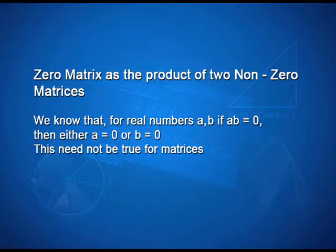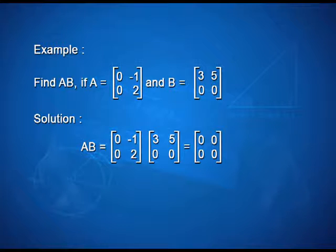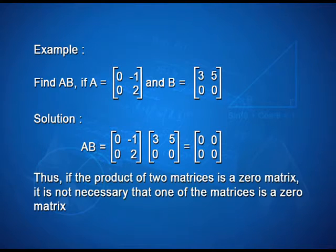Now let us see a zero matrix as the product of two non-zero matrices. We know that for real numbers A and B, if AB is 0 then either A is 0 or B is 0. This need not be true for matrices. Find AB if matrix A equals [0, minus 1; 0, 2] and matrix B equals [3, 5; 0, 0]. On simplification, we get a zero matrix of order 2: [0, 0; 0, 0]. Thus, if the product of two matrices is a zero matrix, it is not necessary that one of the matrices is a zero matrix.